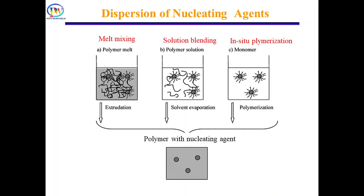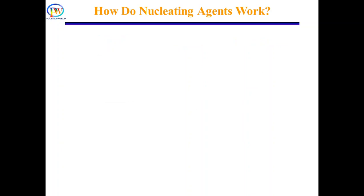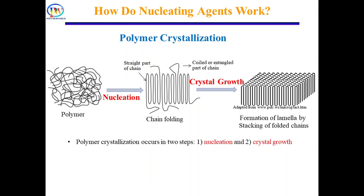Addition of nucleating agents in the polymer matrix increases the rate of crystallization by facilitating formation of crystals. Now let's try to understand how nucleating agents work. To understand the role of a nucleating agent in enhancing the rate of crystallization, we first need to know about polymer crystallization. In short, polymer crystallization occurs in two steps: nucleation and growth.